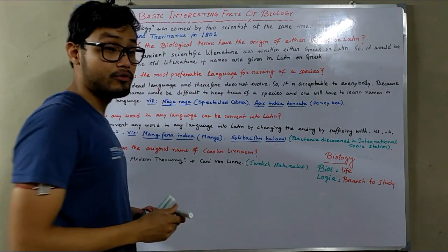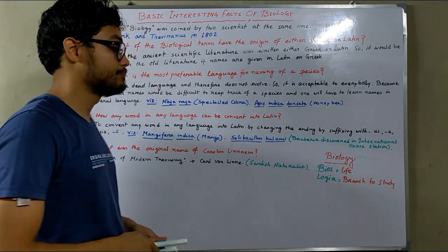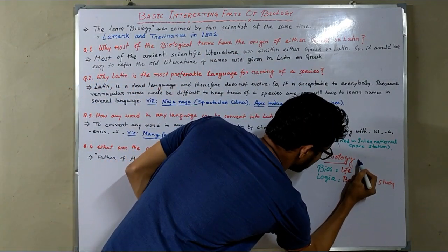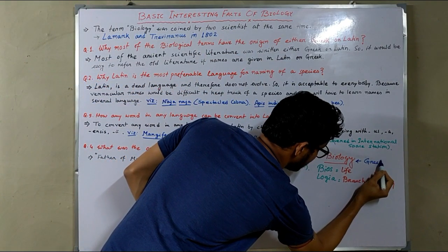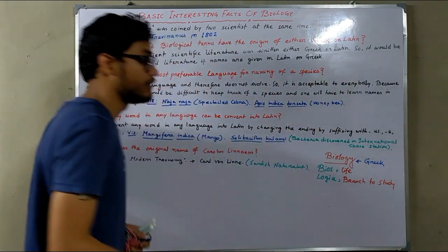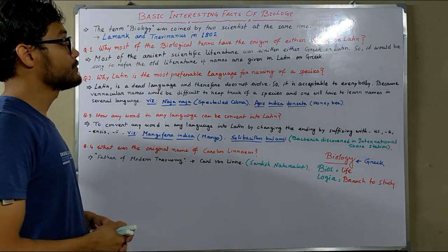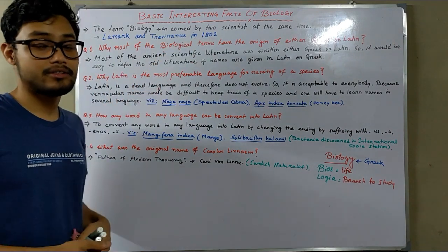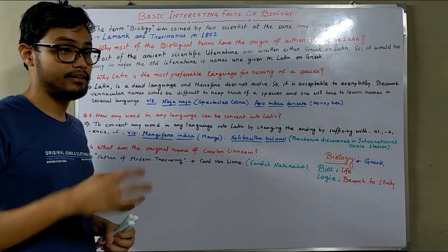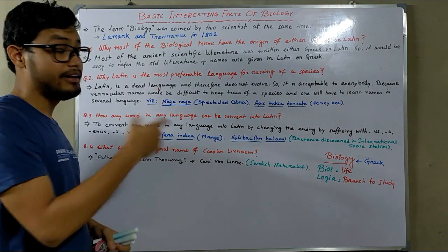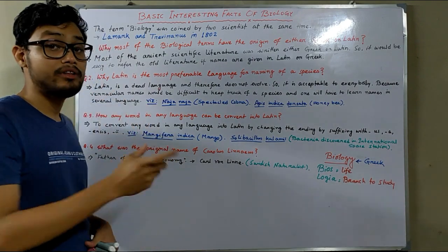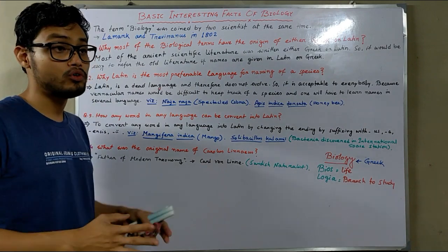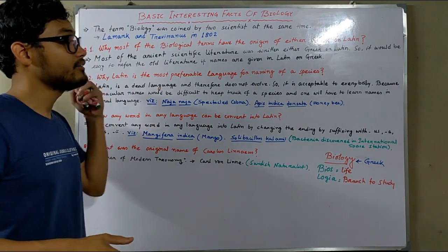Biology, as I told you, is a branch that deals with living organisms. The term biology has its origin from Greek. The term biology was coined by two scientists at the same time in 1802 — Lamarck and Treviranus. Both scientists coined the term biology independently and separately.